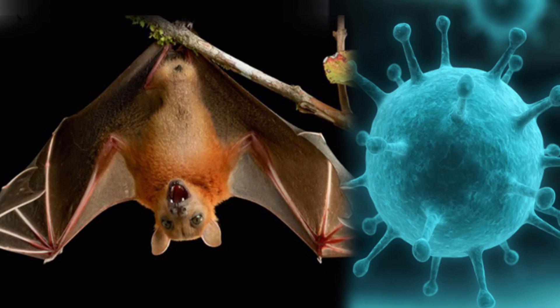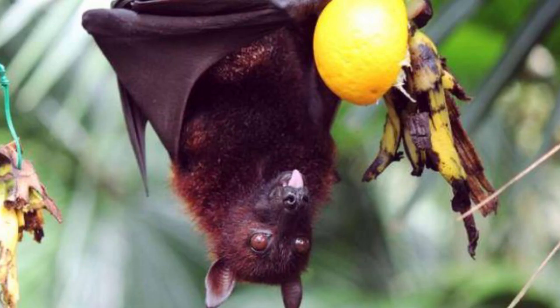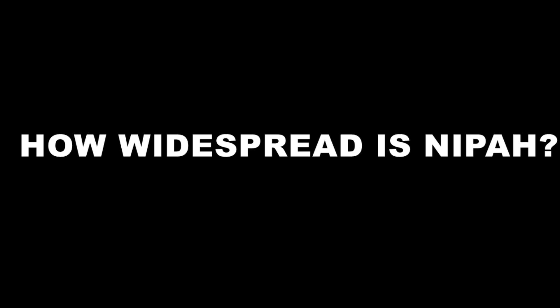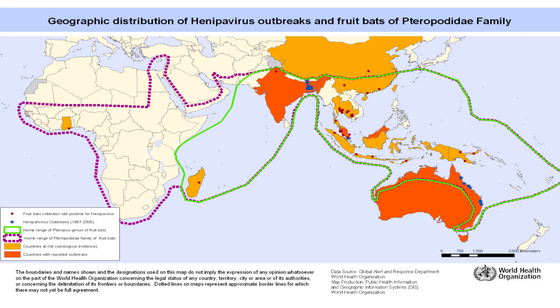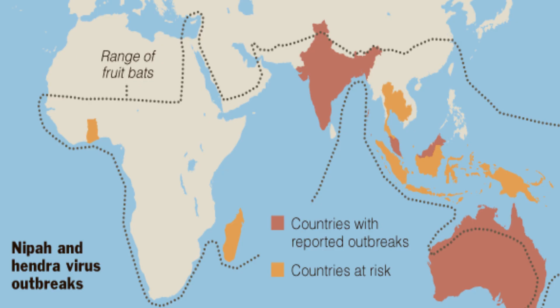The virus which causes the disease is commonly found in various species of fruit bats, considered carriers of the disease. Because of the widespread dispersion of the bat species Pteropodidae across the globe, Nipah outbreaks have been observed in countries including Australia, Bangladesh, India, Philippines, Indonesia, Vietnam, Cambodia, China, Thailand, Iran, Madagascar, and most of Africa.